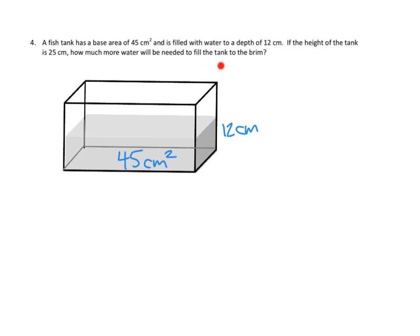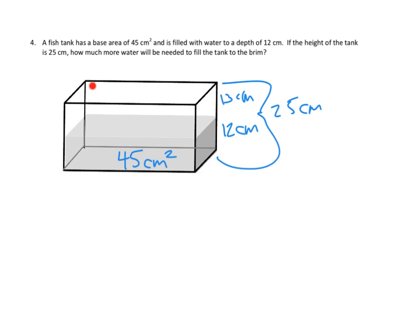The overall height is 25 centimeters. That makes it really easy to figure out what's left. It's 25 centimeters tall, and 12 centimeters deep is where the water already is, so that leaves 25 minus 12 — that'd be 13 centimeters left to go. So basically we're being asked: what is the volume of the part of the tank that isn't filled up yet? We would normally say length times width times height, but they don't tell us the length and the width — they tell us the area of that base rectangle.